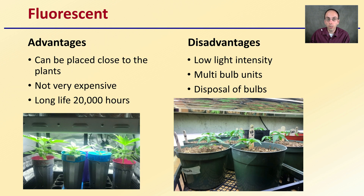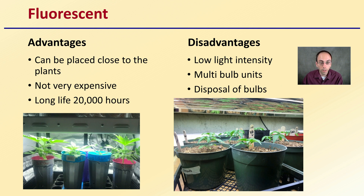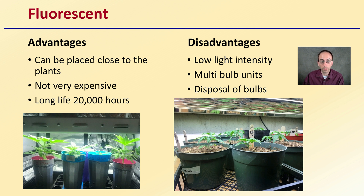Looking at fluorescent lights: the advantages are that they can be placed really close to the plants, they're not very expensive, and the bulbs have a very long life of about 20,000 hours. The disadvantages are that they have a low light intensity, they use multiple bulbs per unit, and the disposal of those bulbs can be a challenge because of the toxic metals they contain.